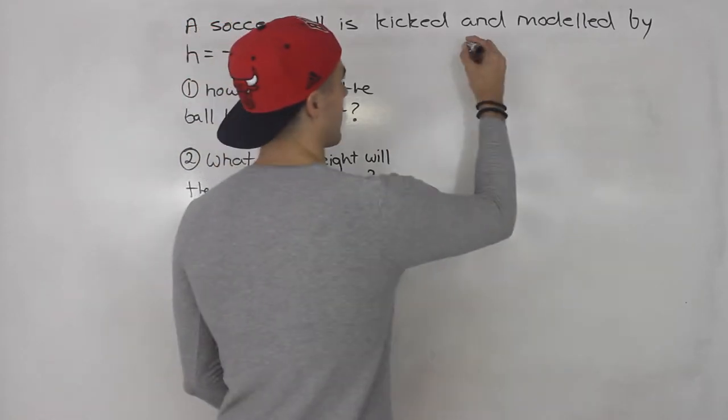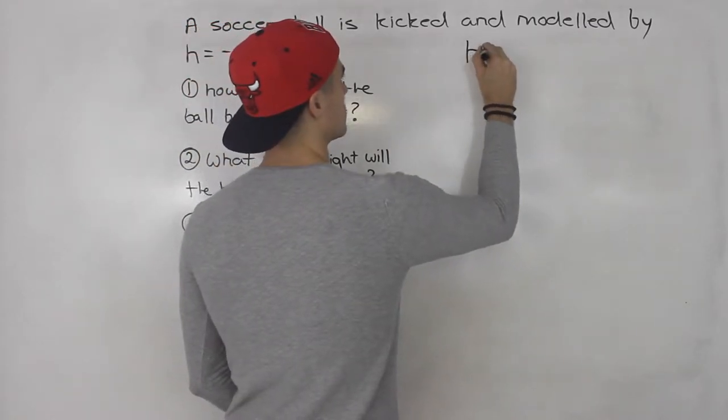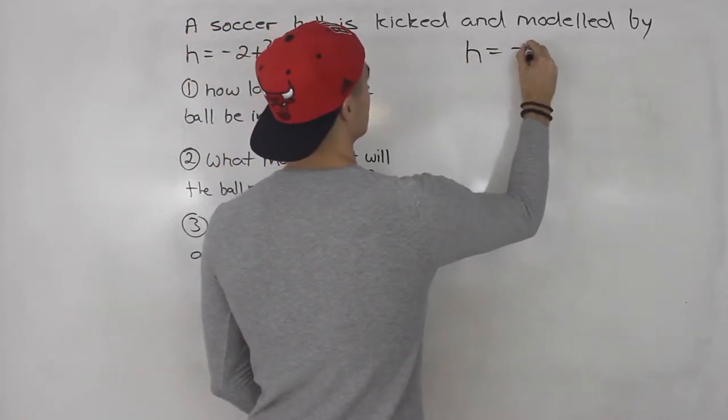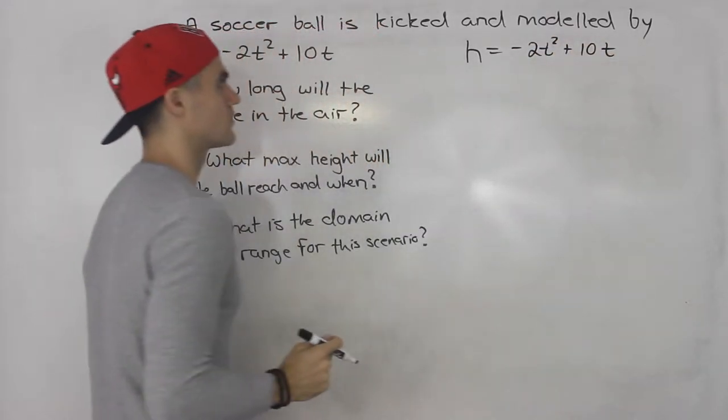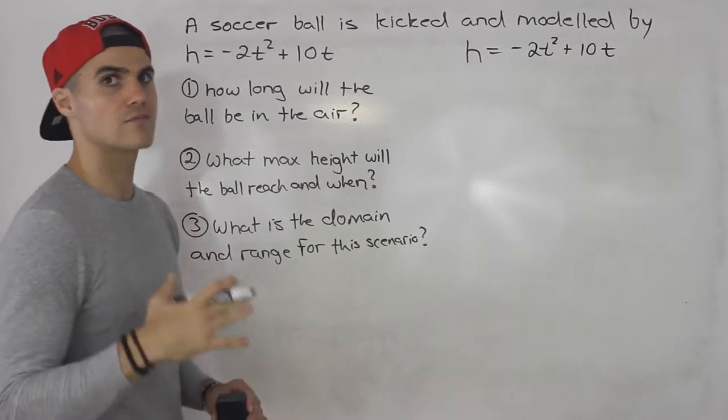Okay, so we have h. Let's rewrite it here: h is negative 2t squared plus 10t. First thing you want to do with these types of questions is graph the quadratic.